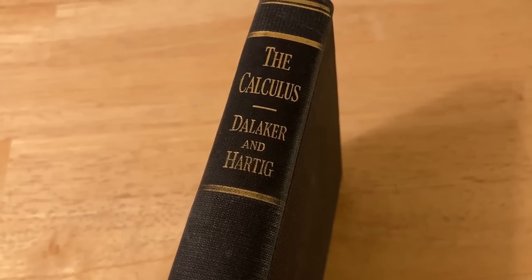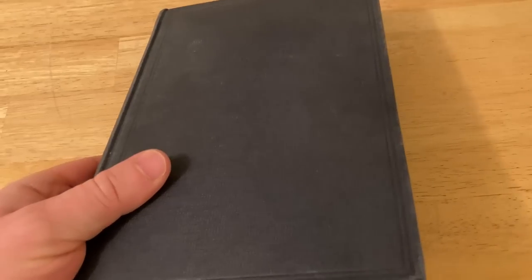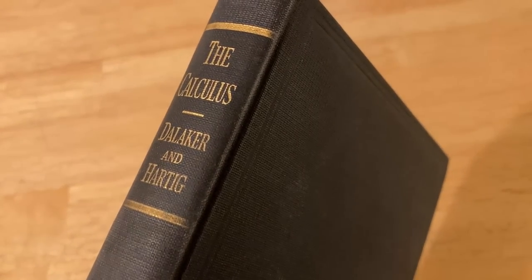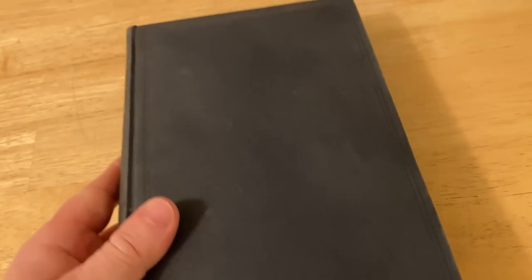This book is called The Calculus, and it was written by Dahliker and Hartig. This book is a really good size. You can carry it around with you, and it's still quite affordable. You can probably get a copy for not too much. It is long out of print, so it's a little bit hard to find, but I'll try to leave a link in the description if I can find a copy available. Pretty cool book, and we're going to talk about it in this video.